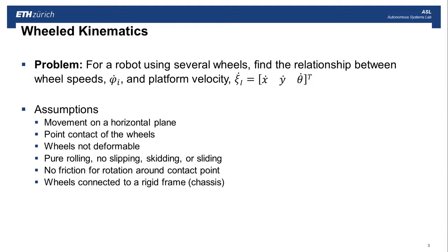We'll also assume that the wheels are ideal wheels. They have a single point of contact with the ground, they're not deformable at all, the motion of the wheel is pure rolling with no slipping, skidding, or sliding. We assume there's no friction for rotation about the contact point, and the robot is rigid with no deformation of the robot chassis. These are really common assumptions that we'll make in a modeling step.